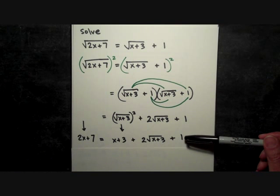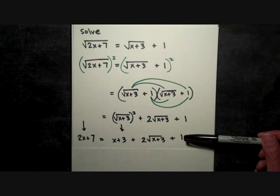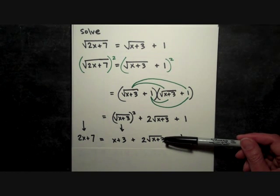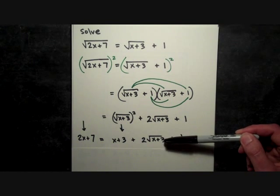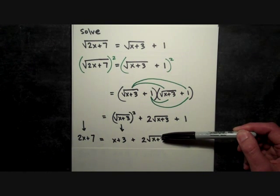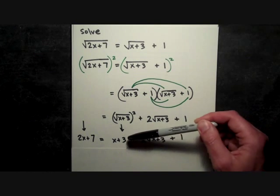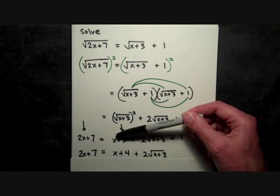So now if you look at this as an equation with just one radical, one square root, we know our steps—our procedure is going to be to isolate the square root. So let me first do that just by combining the 1 and the 3. That gives us x + 4.